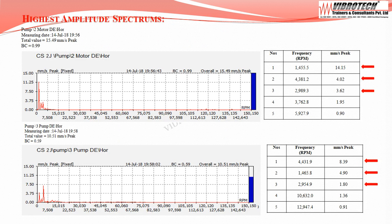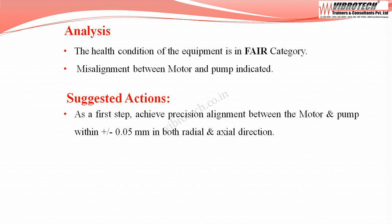Going through the spectrum and frequencies, at the motor drive end the dominant peak frequencies are 1×, 2×, and 3× the running RPM, indicating misalignment between the motor and pump. Spectrums at the pump drive side also show dominant peak frequencies of 1×, 2×, and 3× running RPM, which also indicates misalignment between the motor and pump. The equipment is analyzed to have misalignment between motor and pump.